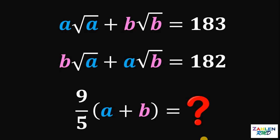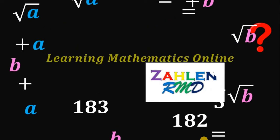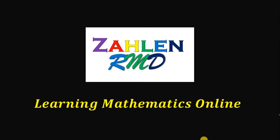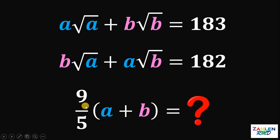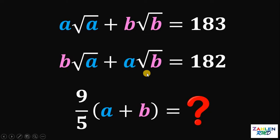Good day everyone, here's our math challenge for today. Solve for the value of 9 over 5 multiplied by A plus B, given the following equations: A times square root of A plus B times square root of B equals 183, and B times square root of A plus A times square root of B equals 182.